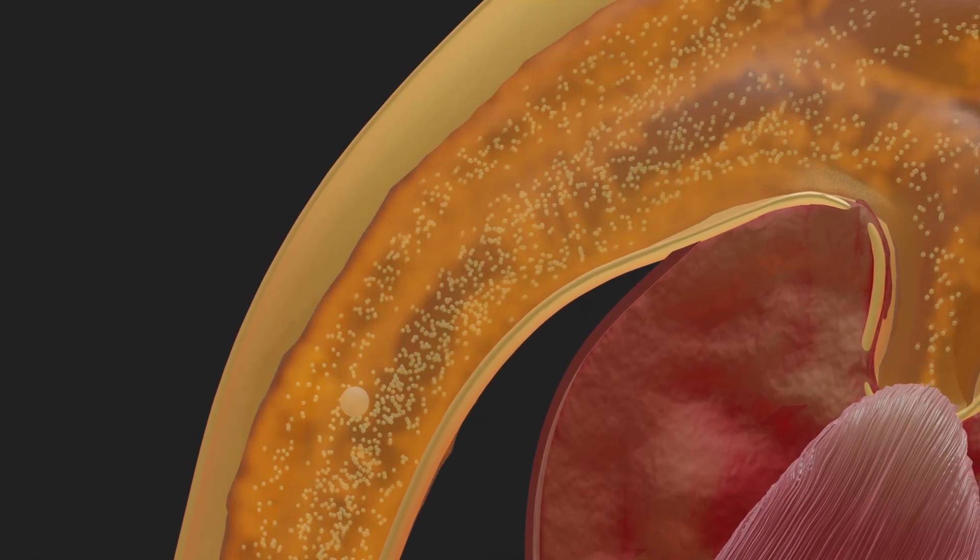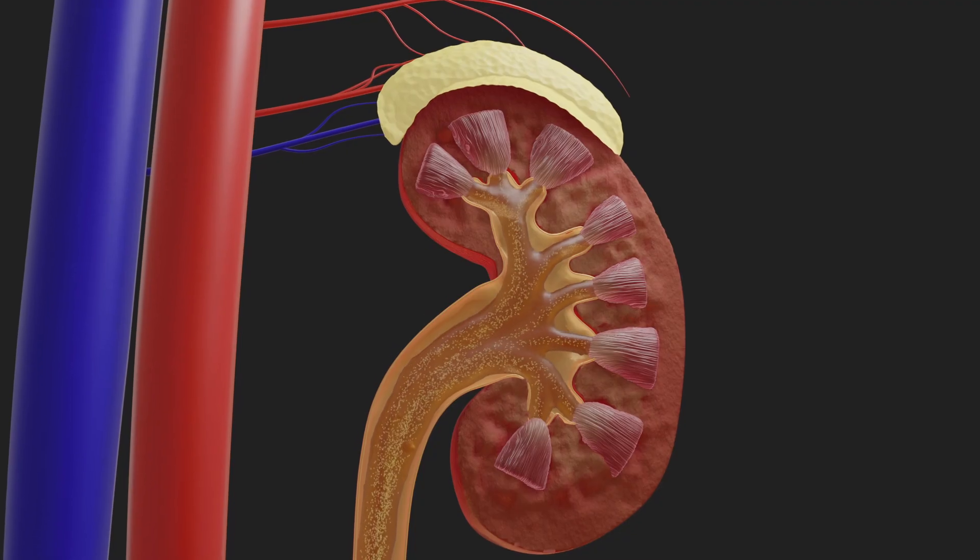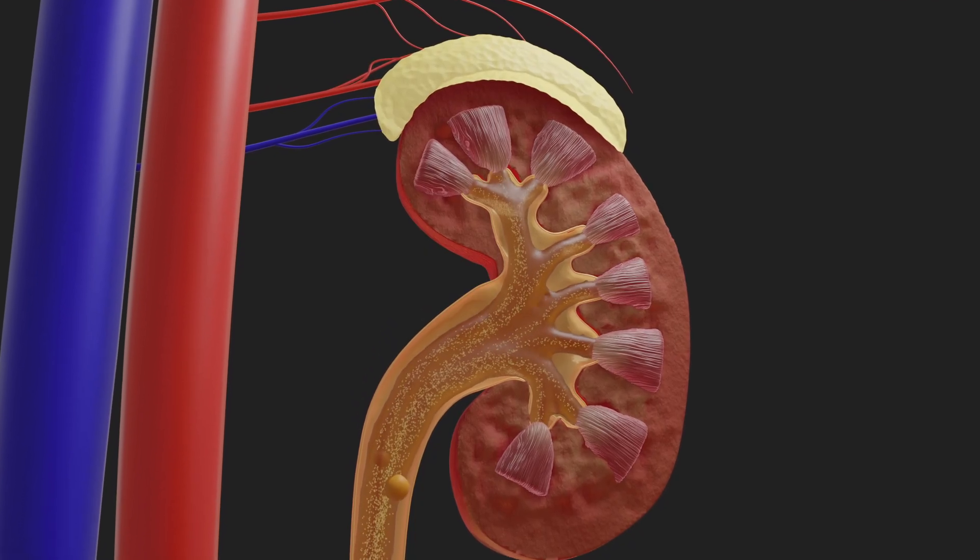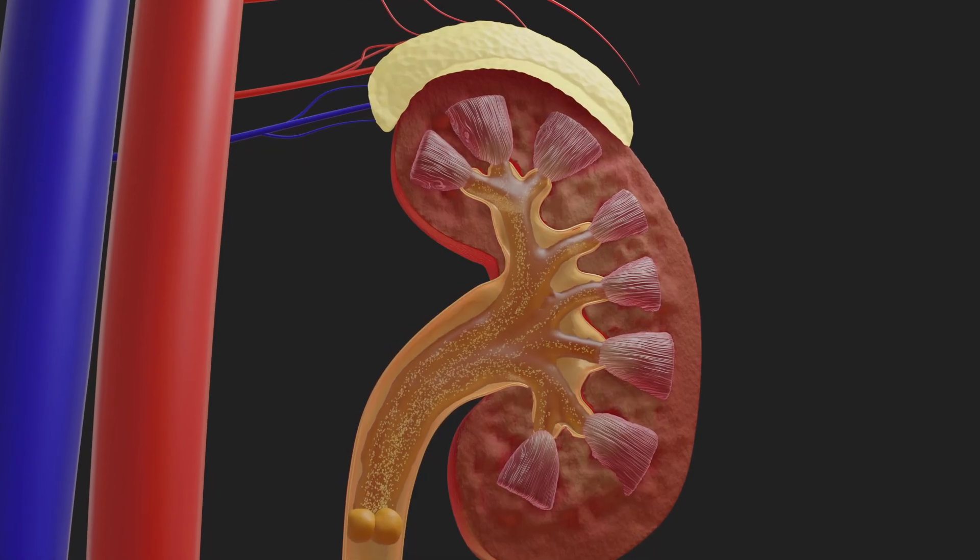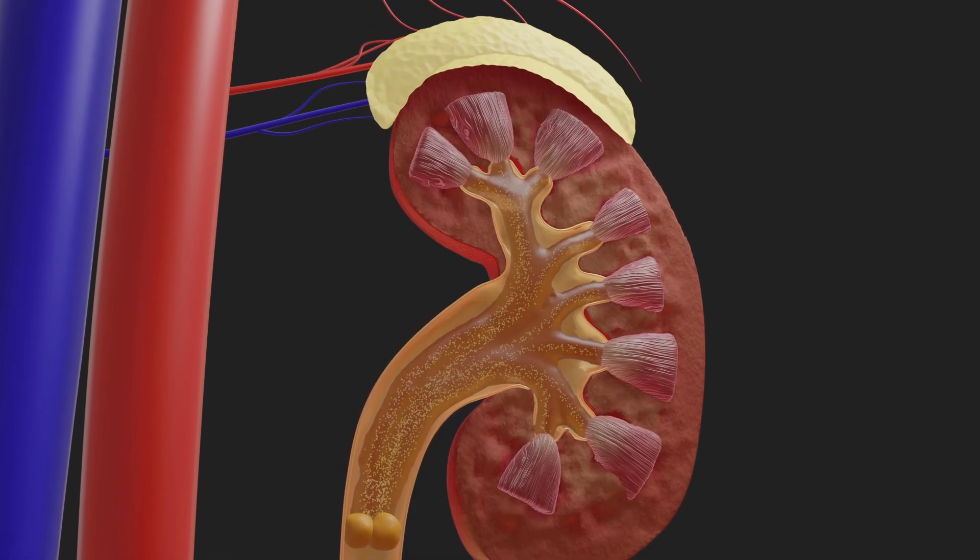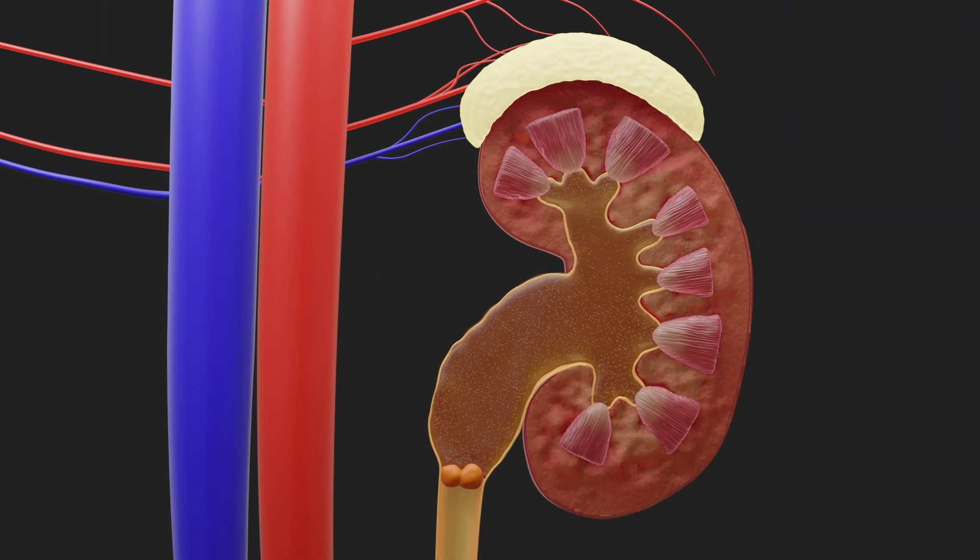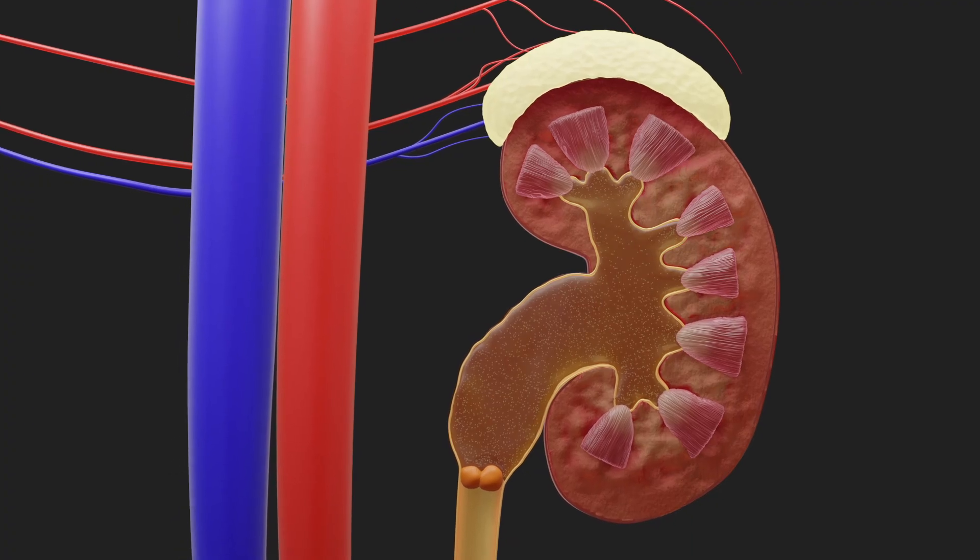If larger conglomerates form and block a ureter, this not only causes severe pain, but also leads to urinary retention. As a result, the renal pelvis visibly expands, and prolonged congestion can cause significant damage to the organ over time.